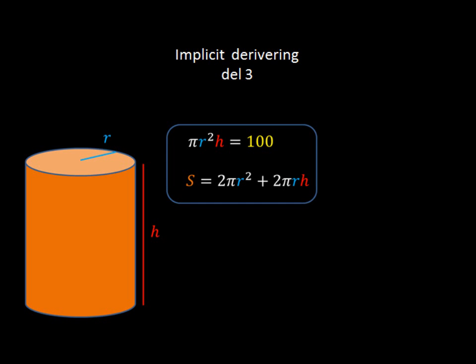Welcome back. This is part three, and we're going to be looking at how to use the least amount of material when building a can of a certain volume. And this will be done implicitly instead of explicitly, although you could do it that way too.